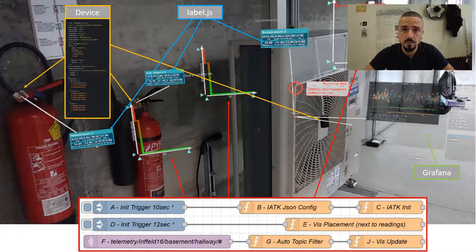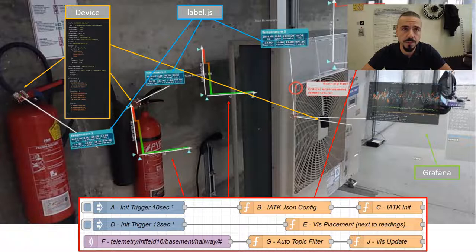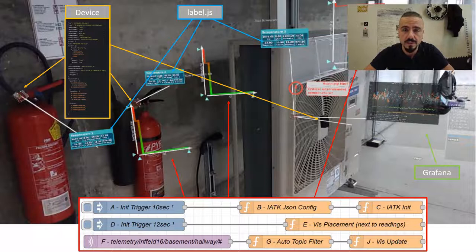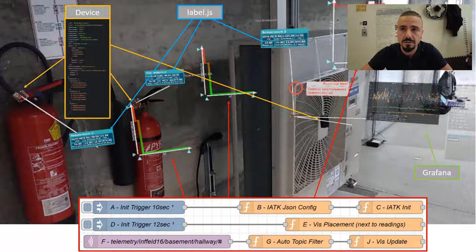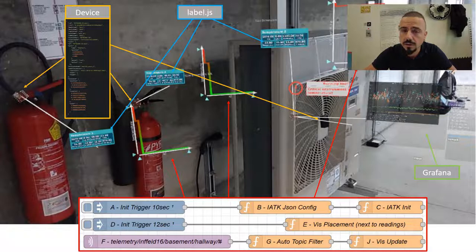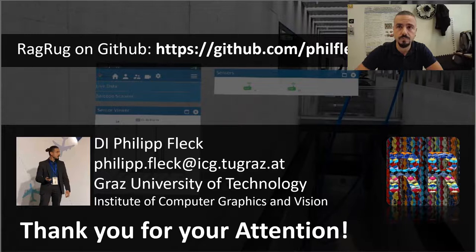Following the visualization from our first slide, we see visualizations created with a Node-RED flow shown as red lines on the bottom. We see a JSON configuration file that defines the physical-virtual model shown in orange. We see external JavaScript code held in light blue. Additionally, an external visualization tool like Grafana can be used to load external graphs directly into the client application, shown in green.